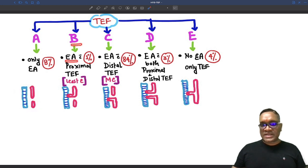B type is esophageal atresia with proximal fistula. So, here you can see proximal fistula is present, trachea is normal and there is esophageal atresia with proximal tracheoesophageal fistula.